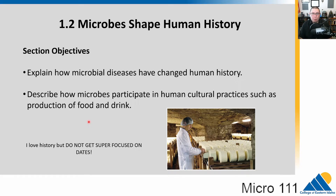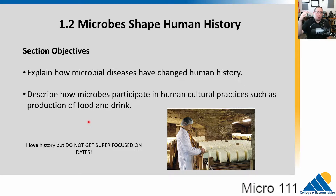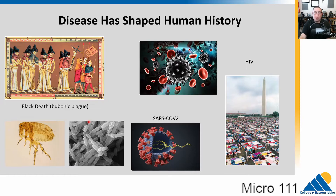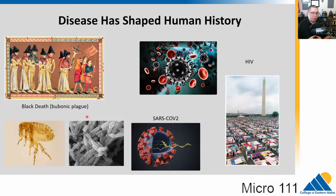Into chapter 1.2. In this section, we'll talk about how microbial diseases have changed human history, and how microbes participate in human cultural practices. This is a brief history — I'm a huge fan of history — but don't get bogged down on dates. Try to know the general order that things happened in. A broad understanding is what we're going for. One key point is that disease has shaped human history, and the linking of human disease to microbes is a key event in history.